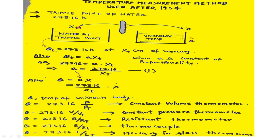In this method, the triple point of water was used as a reference point. The triple point is the point at which the solid, liquid, and gaseous phases of water coexist together in equilibrium. Scientists arbitrarily assigned a numerical value of 273.16 Kelvin to this triple point of water.